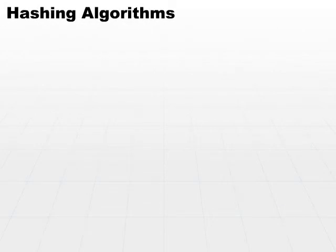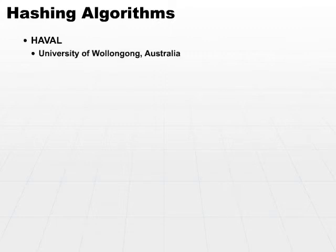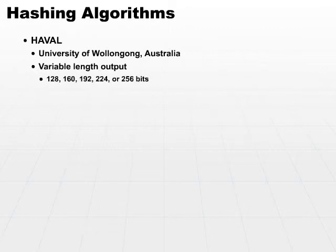For another couple of hashing algorithms — these are slightly newer hashing algorithms. The HAVAL algorithm was originally developed at the University of Wollongong, Australia. This algorithm differs in that it uses a variable-length output. The output could be 128, 160, 192, 224, or 256 bits, so we get a little more flexibility through this algorithm.